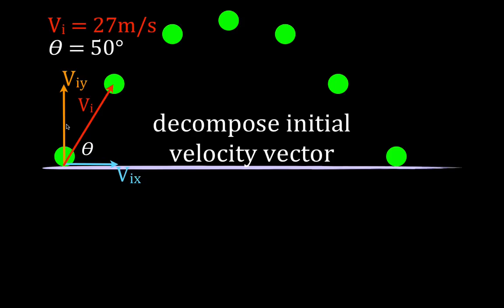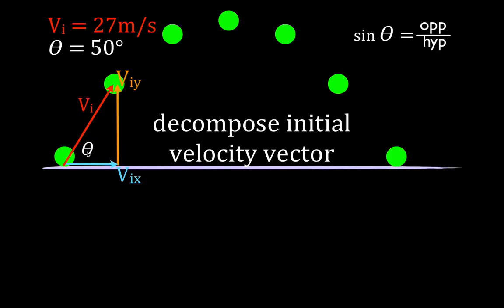We have an x component and a y component. Since it's a vector, I can move it as long as I don't change its direction or its magnitude. We now have a nice right triangle where we know an angle and we know the hypotenuse — the initial velocity is 27 meters per second long, and this angle is 50 degrees. Therefore we can use our sine and cosine trig functions to figure out the length of the opposite side and the adjacent side.